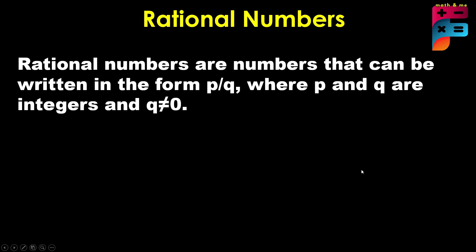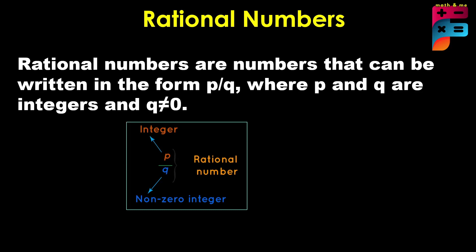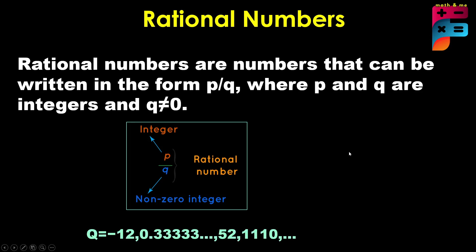Rational numbers. Rational numbers are numbers that can be written in the form p/q, where p and q are integers and q is not equal to 0, because we cannot divide any number by 0. For example, 1/2, 0.333, and 5/2 can all be written in p/q form.